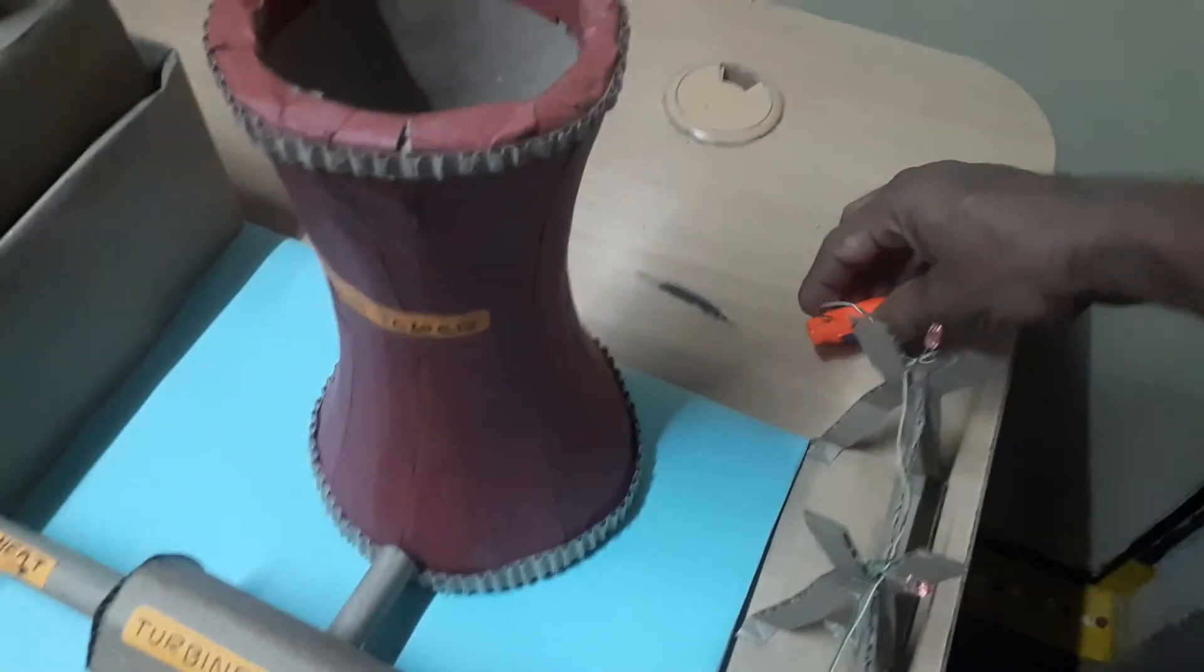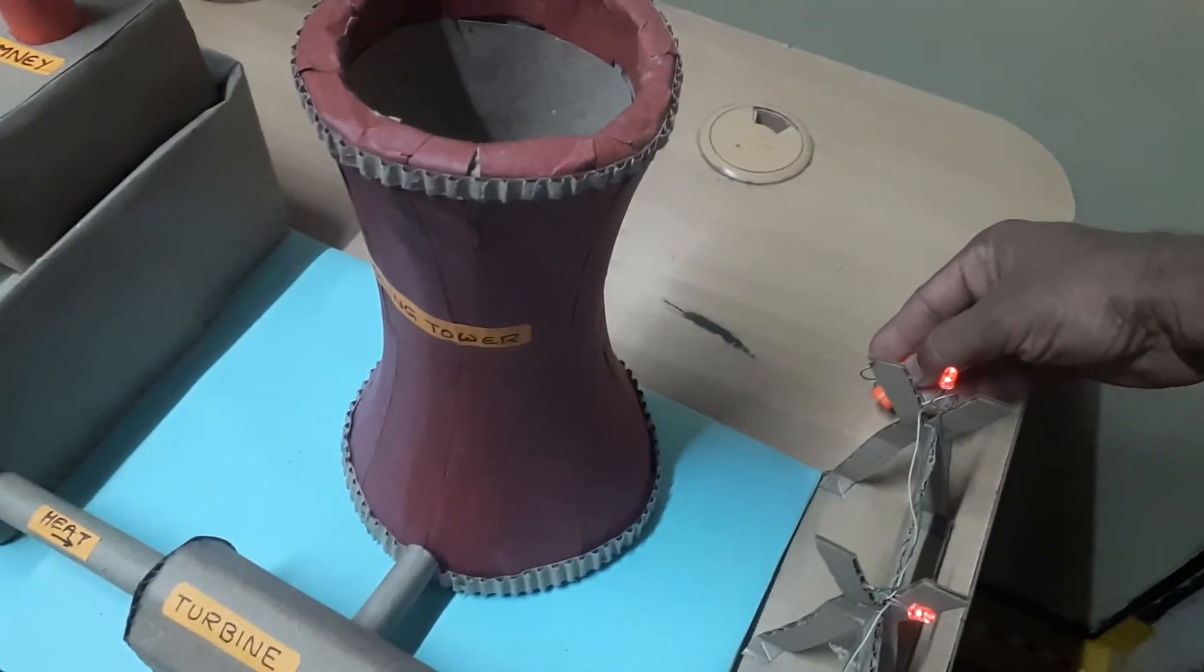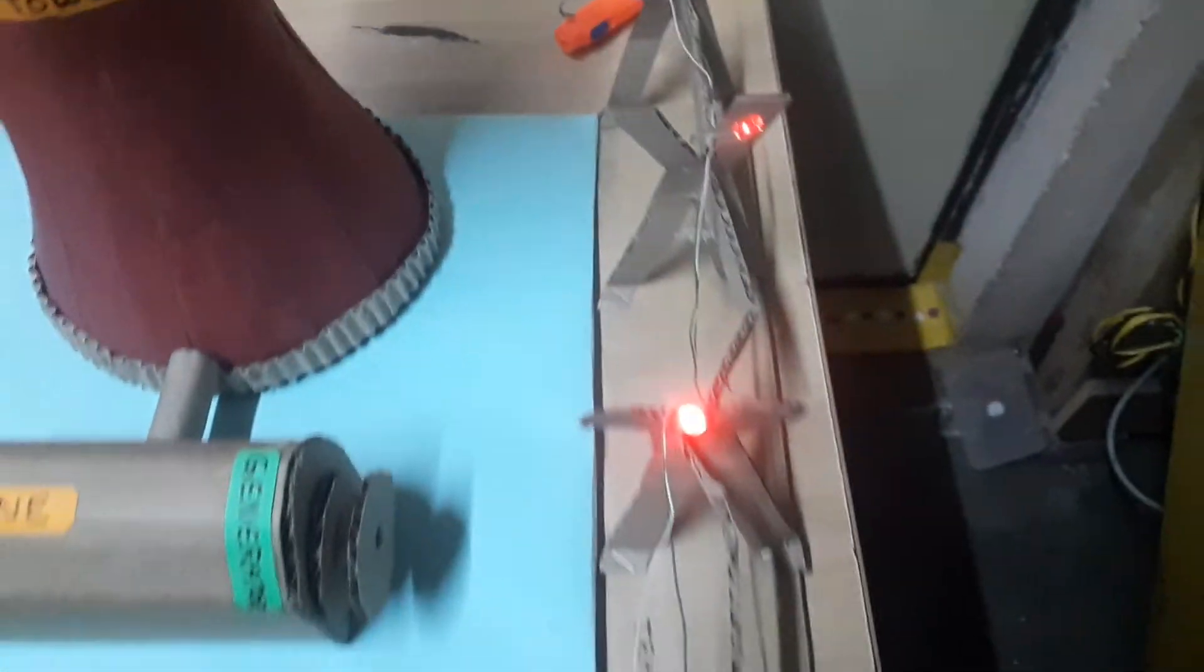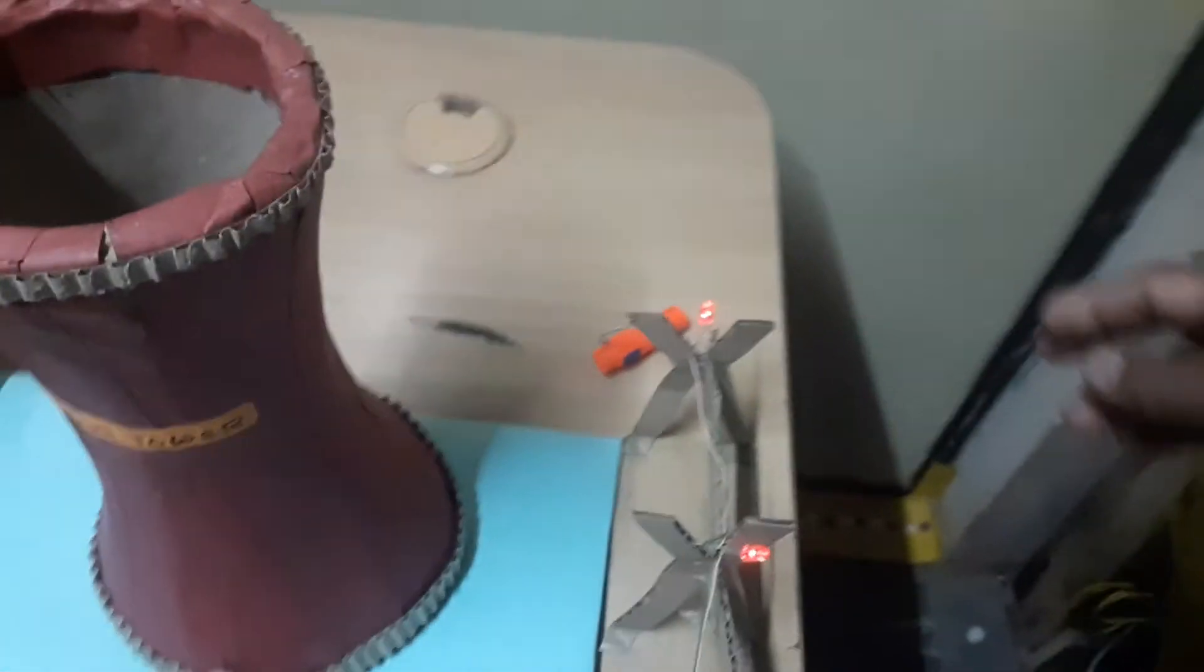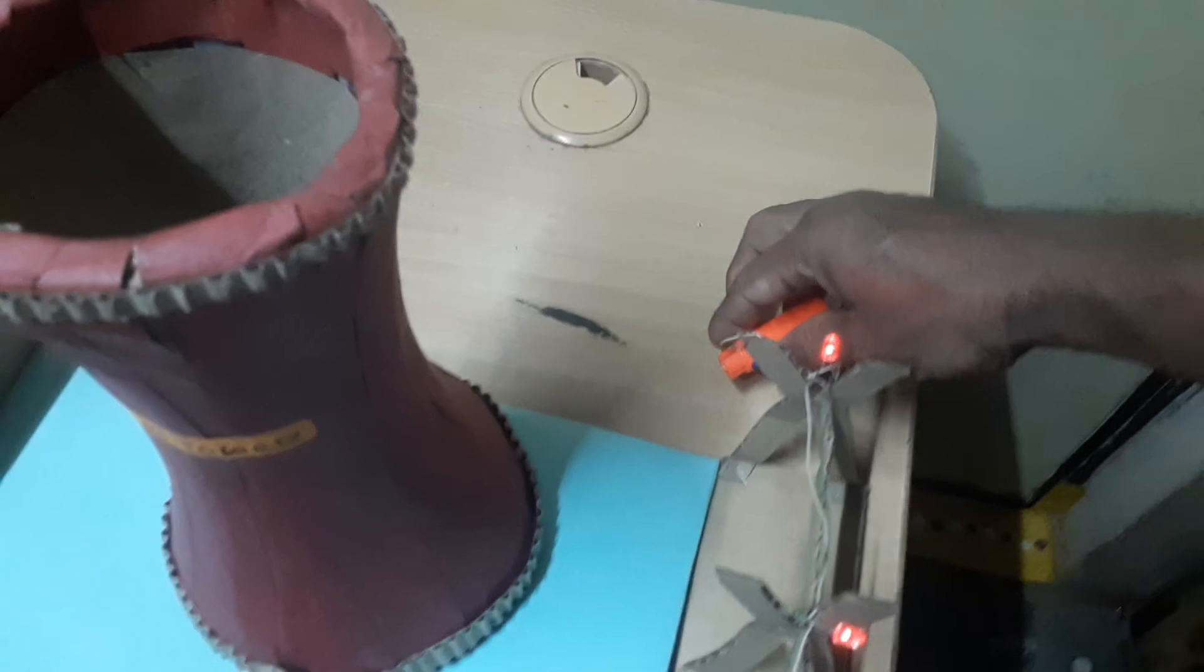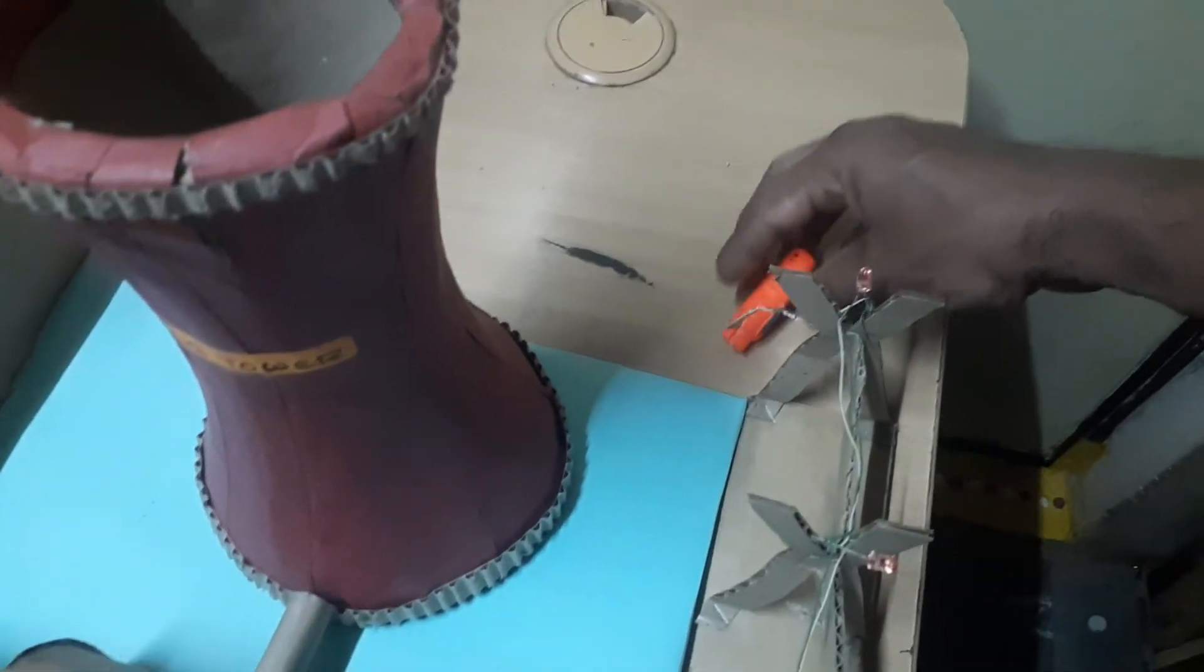You need to switch on this light source in order for the LEDs to glow. Now when you switch on, these LEDs will glow as if power is being transmitted to a distant location. Just before demo, you switch on these lights and switch off when not required.